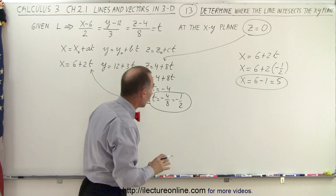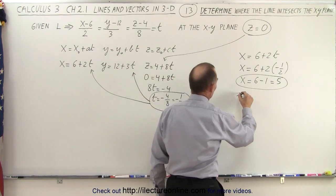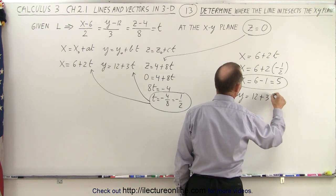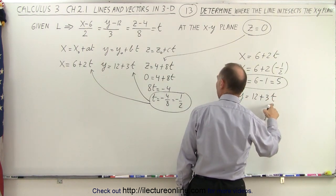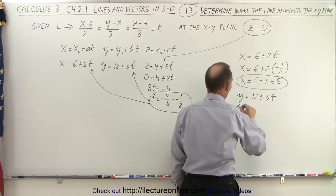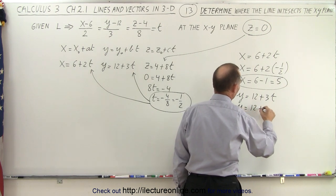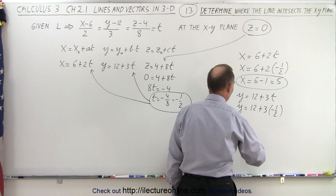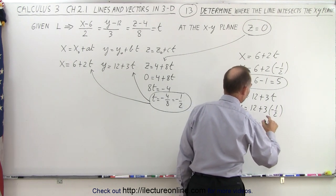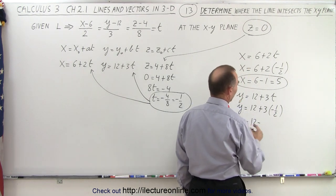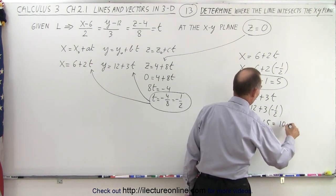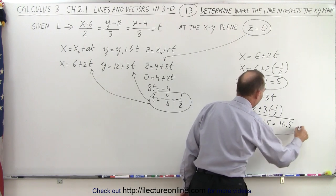We do the same for the other variable y. And so we can say that y is equal to 12 plus 3t. Now, of course, t again is equal to minus 1 half. So we have y is equal to 12 plus 3 times negative 1 half. That would be minus 1.5, which is equal to 10.5. So now we also have a value for y.